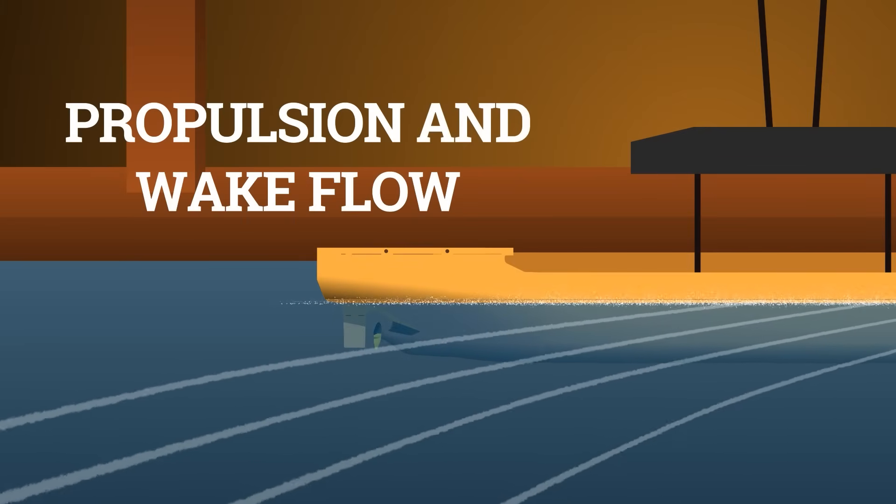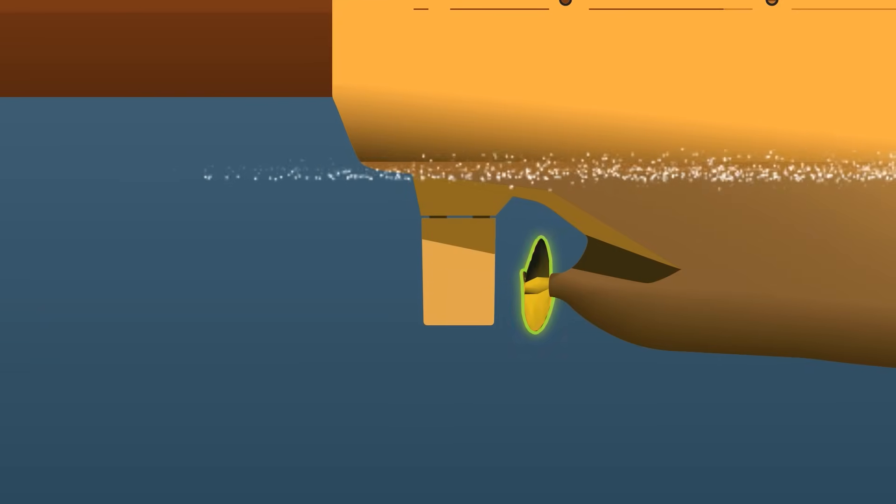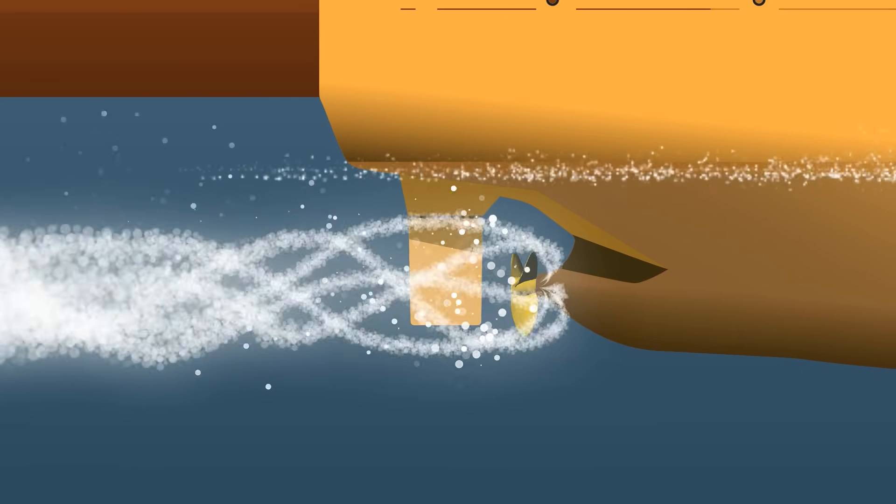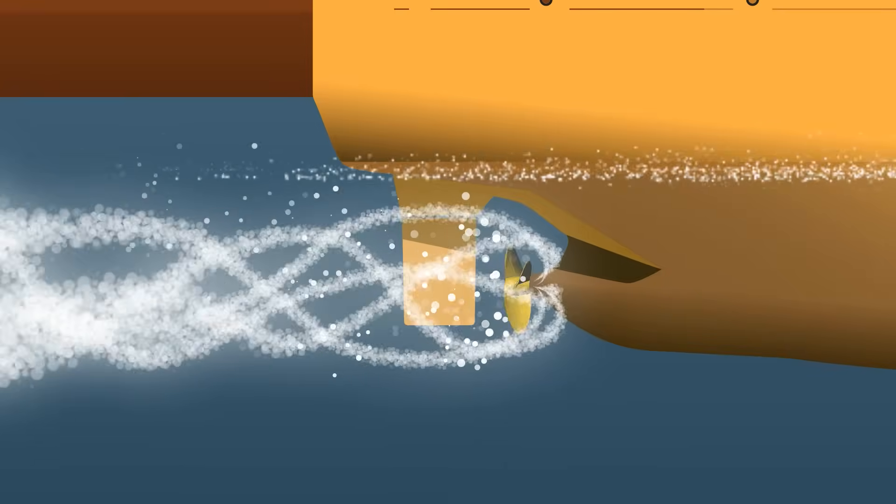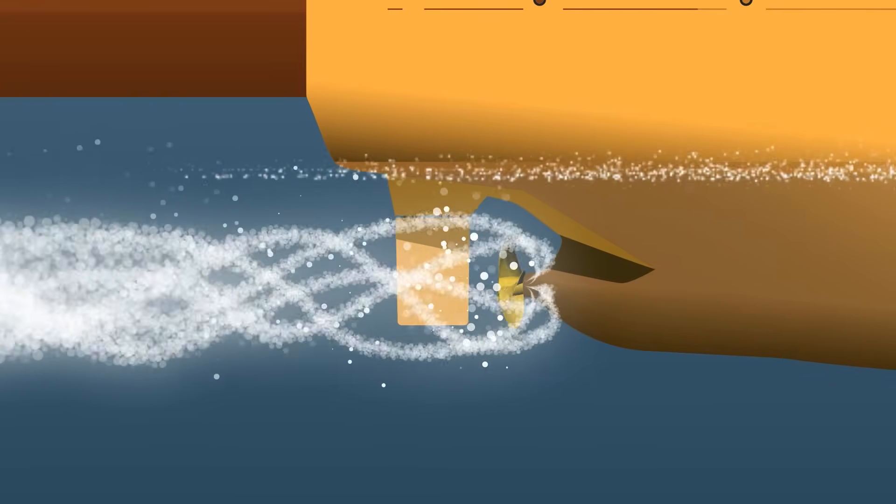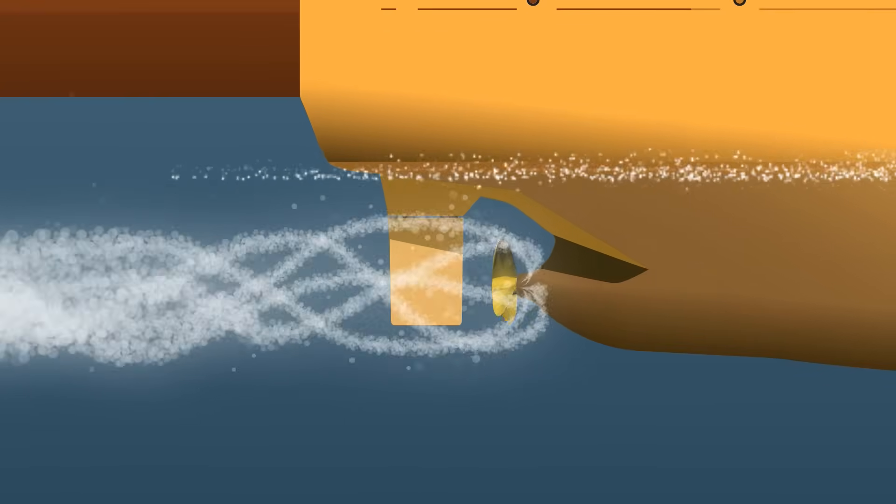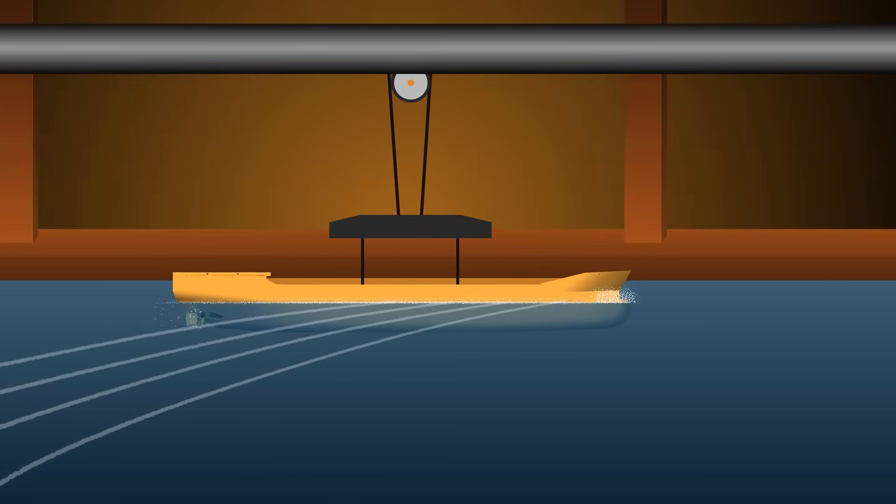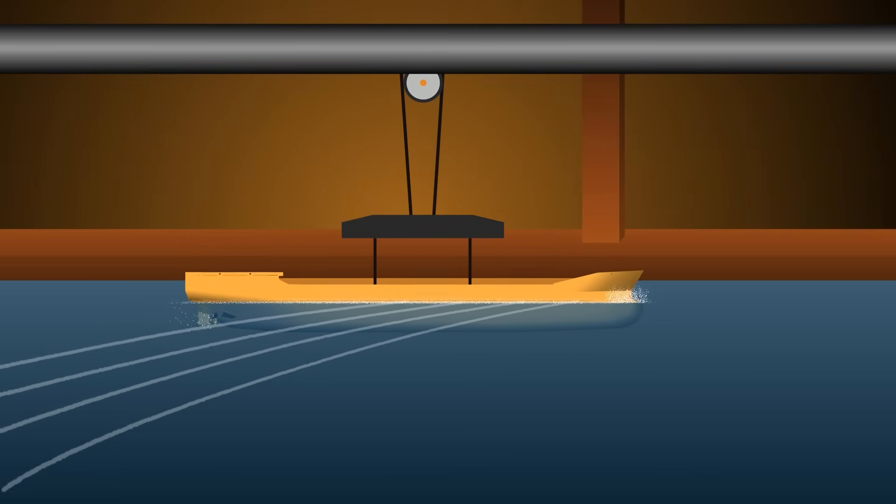Next, propulsion and wake flow. A scaled propeller is installed. Laser sheets and dye tracing reveal how water moves through the wake, and any instability or swirl shows up here long before it causes vibration or noise at full scale. It's a precise, repeatable way to tune the flow between the hull, the propeller, and the rudder.